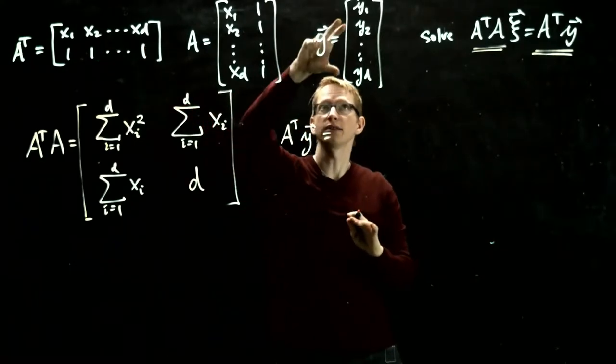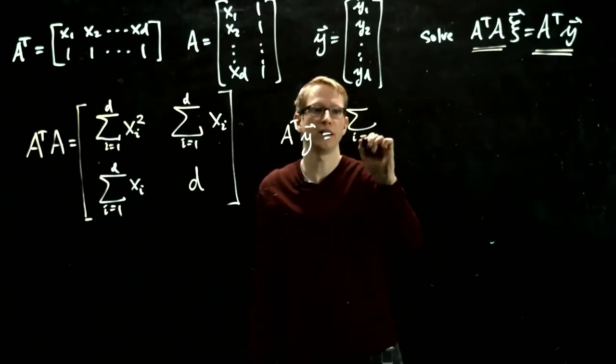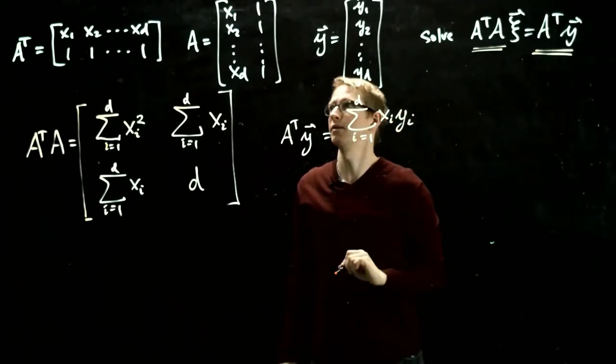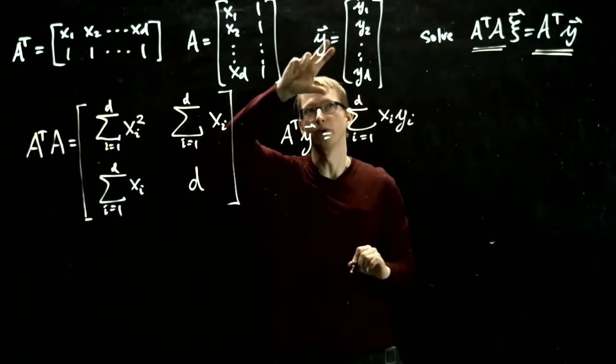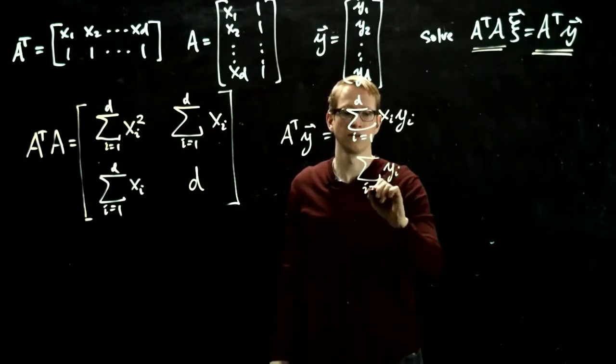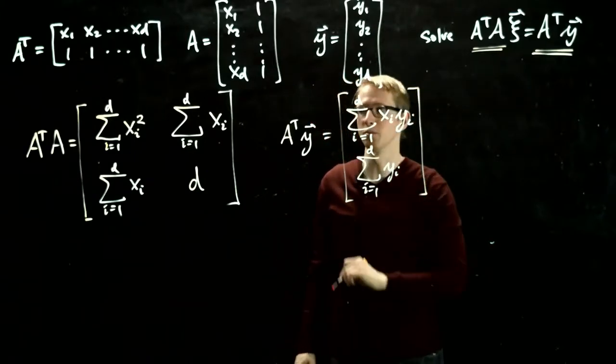So A transpose y is now, take the values of x, multiply them with the values of y. It's sum i equals 1 to d, xi with yi this time. And then it's the second row with this, and that's just the sum of the y's. And it's our vector with two components here.